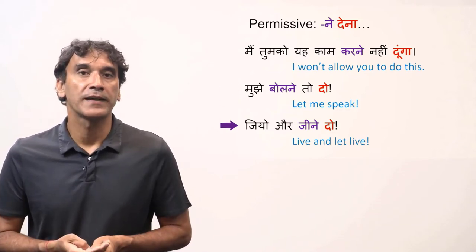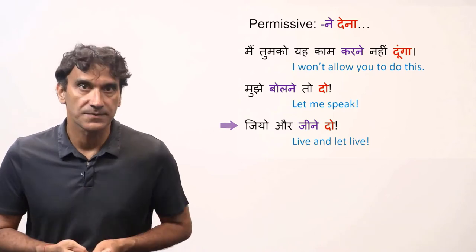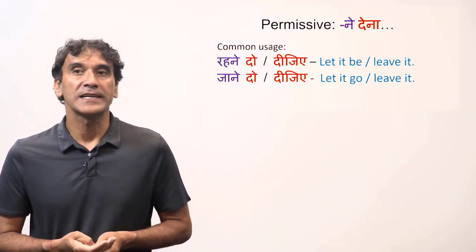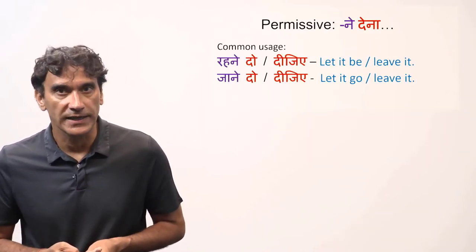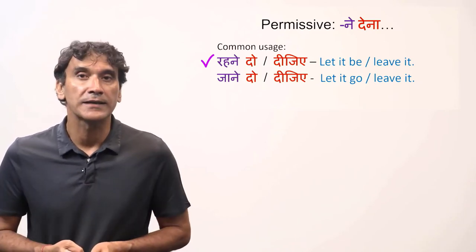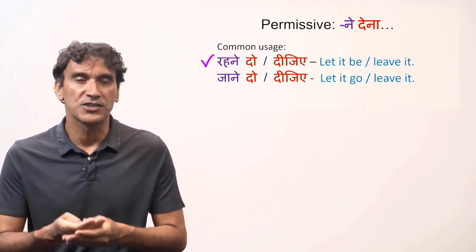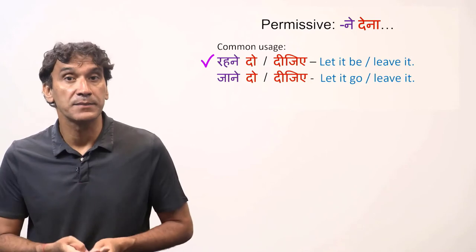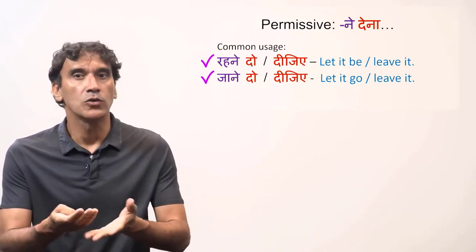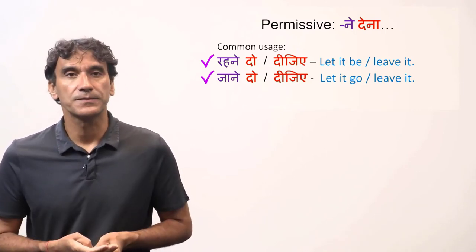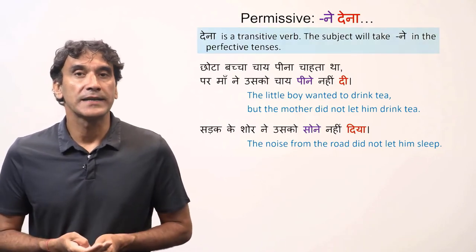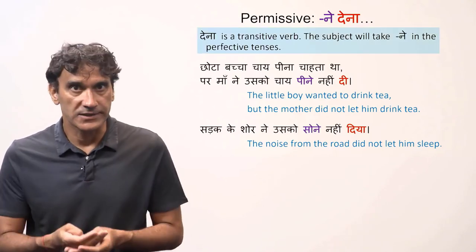'Live and let live' — this is a famous phrase. There are some phrases that Hindi speakers use quite frequently: 'rehne do' or 'rehne dijiye', meaning 'let it be' or 'leave it'. Another way of saying the same is 'jane do' or 'jane dijiye', meaning 'let it go' or 'leave it'. One more thing to keep in mind: the verb 'dena' is transitive, so in perfective tenses the subject will take the postposition 'ne'.